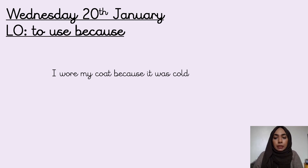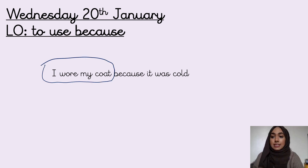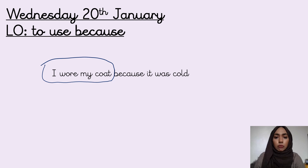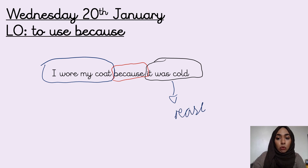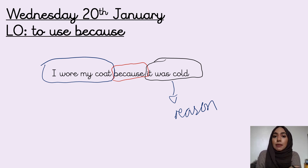Let's have a look at this one: 'I wore my coat because it was cold.' What's our first complete idea? If you said 'I wore my coat,' that is correct — it's a complete idea, it's a full sentence, it would make sense by itself. We've used the conjunction 'because.' What is our second complete idea? 'It was cold' — that is the reason for wearing the coat. So 'because' helps us to give a reason.